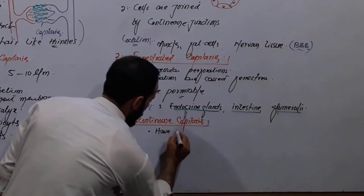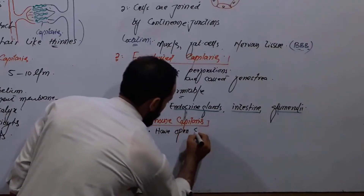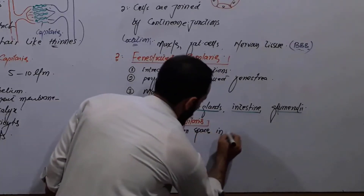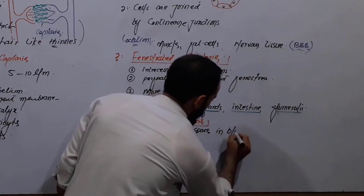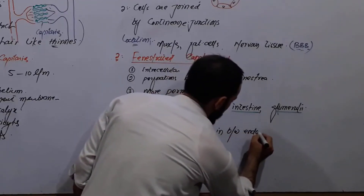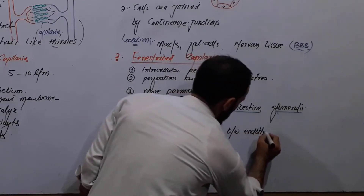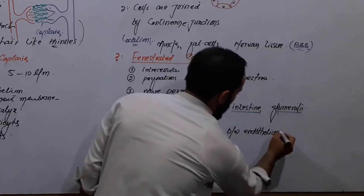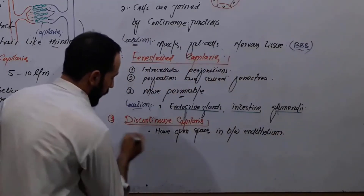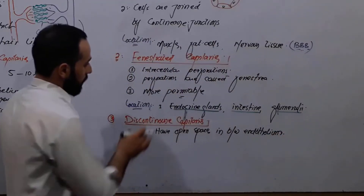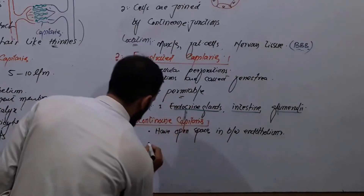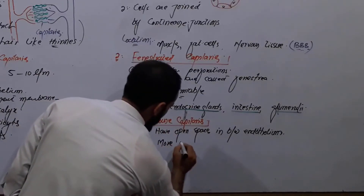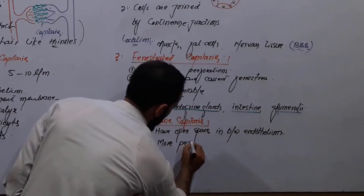Discontinuous capillaries have open spaces in between the endothelium or endothelial cells. We can say that they are also more permeable than the other types.